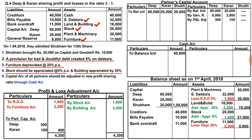Moving to the first adjustment: the new partner Shubham brought capital of 20,000. We post cash account on the debit side and partners capital account on the credit side for 20,000.